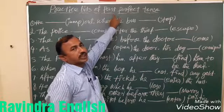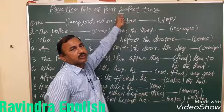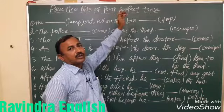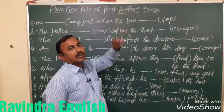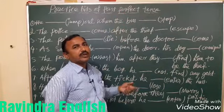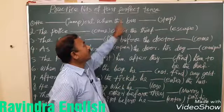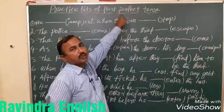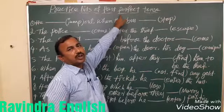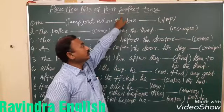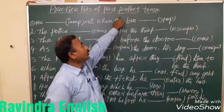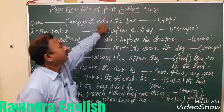In the last classes I explained about the remaining tenses: simple present tense, present continuous tense, present perfect, present perfect continuous tense, simple past and past continuous tense. So this is past perfect tense.